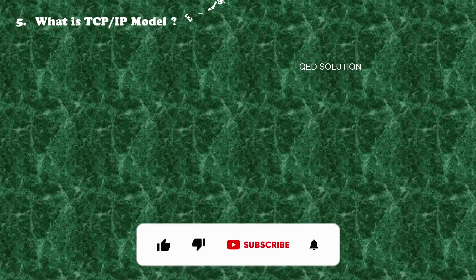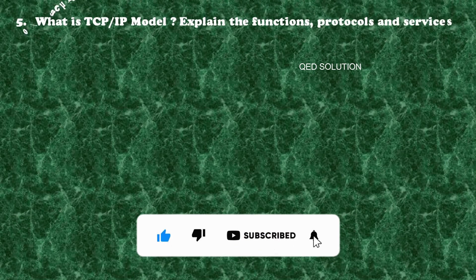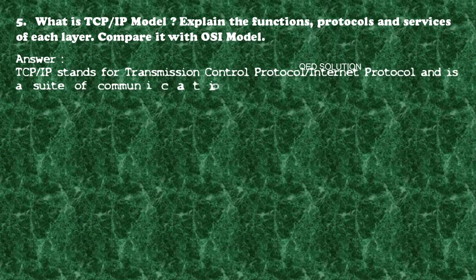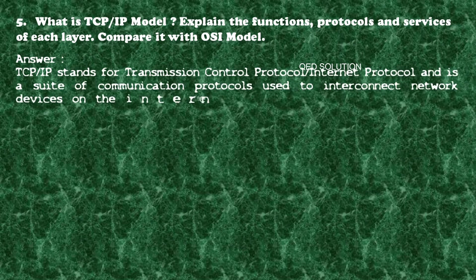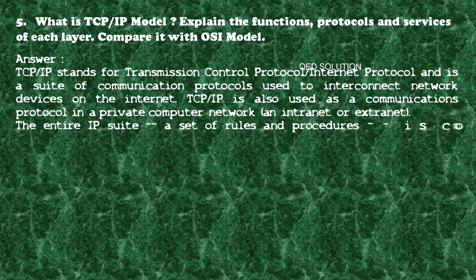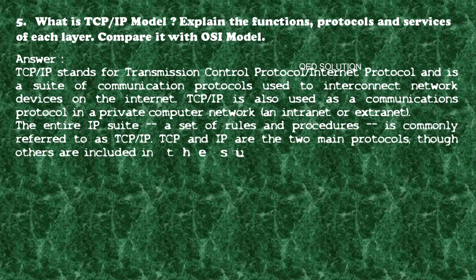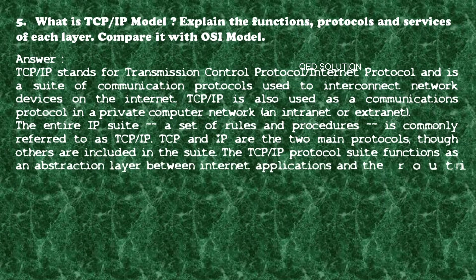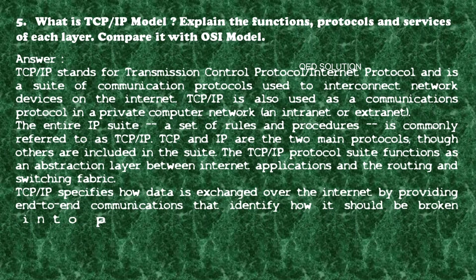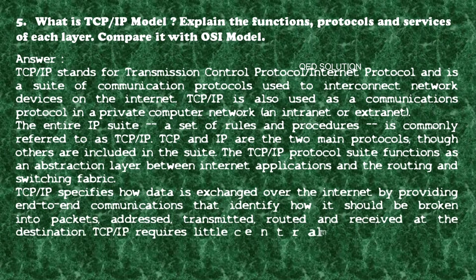Question number five: What is the TCP/IP model? Explain the functions, protocols and services of each layer. Compare it with the OSI model. Answer: TCP/IP stands for Transmission Control Protocol Internet Protocol and is a suite of communication protocols used to interconnect network devices on the internet. TCP/IP is also used as a communications protocol in a private computer network, an intranet or extranet.